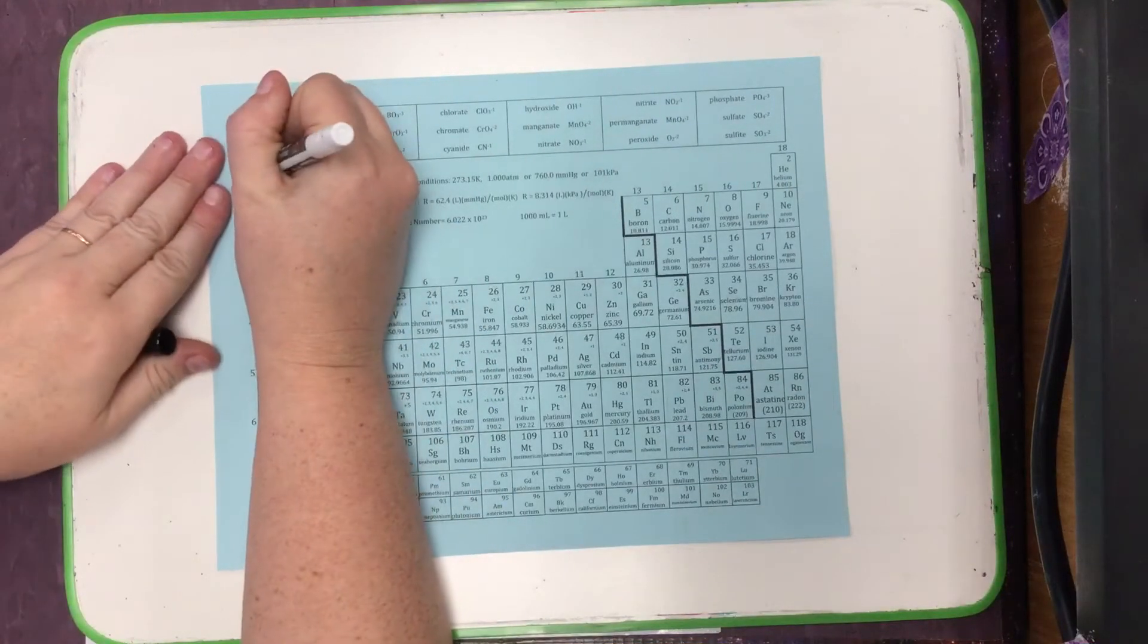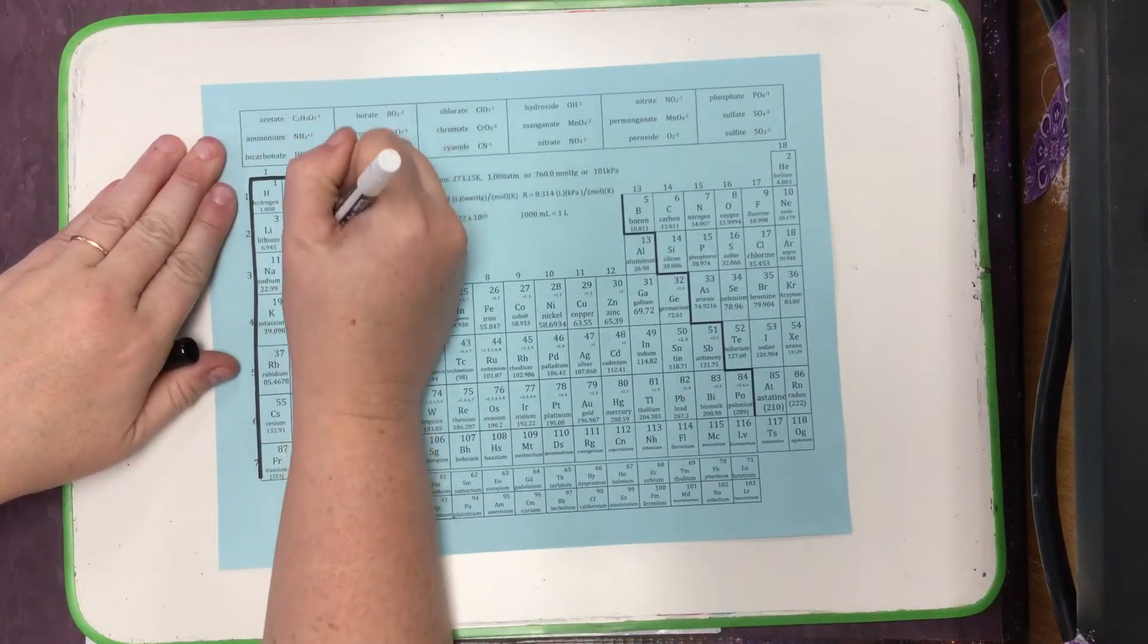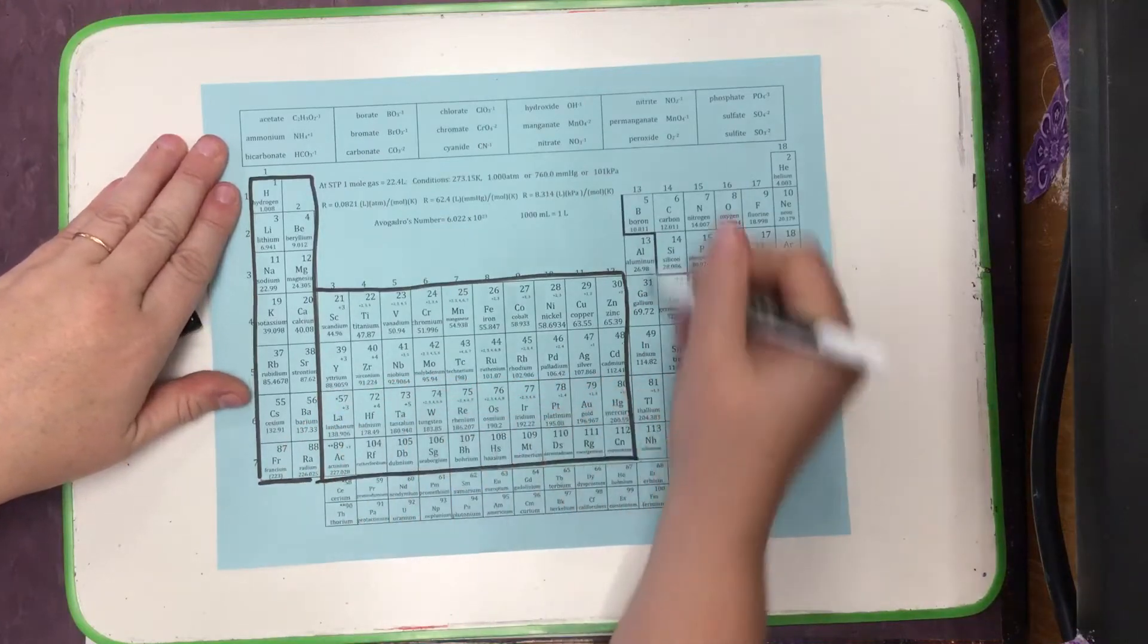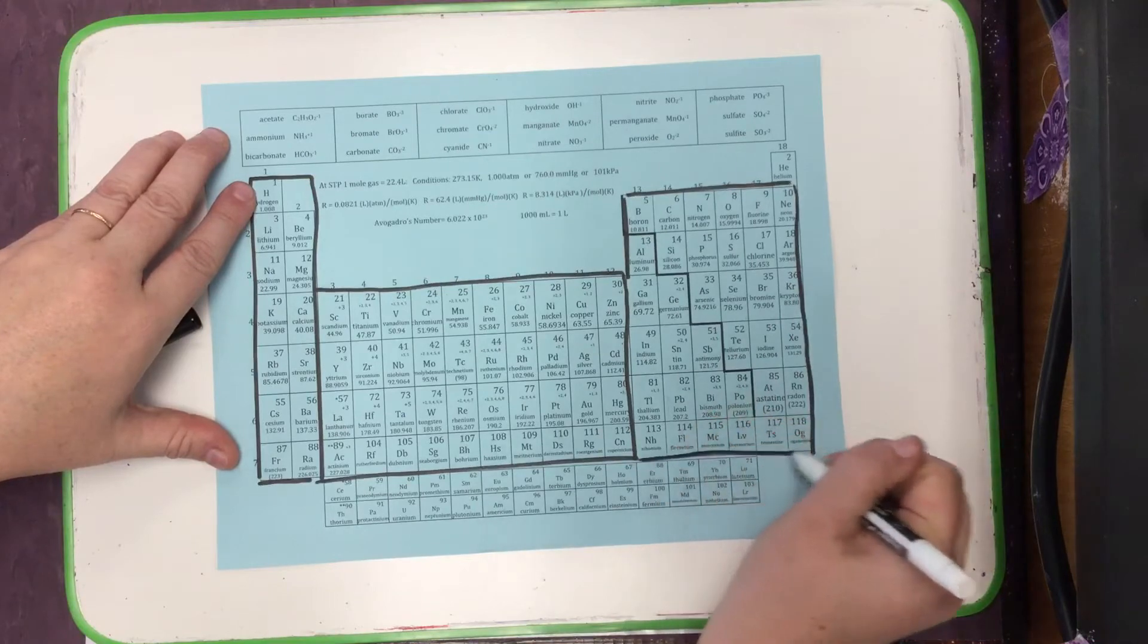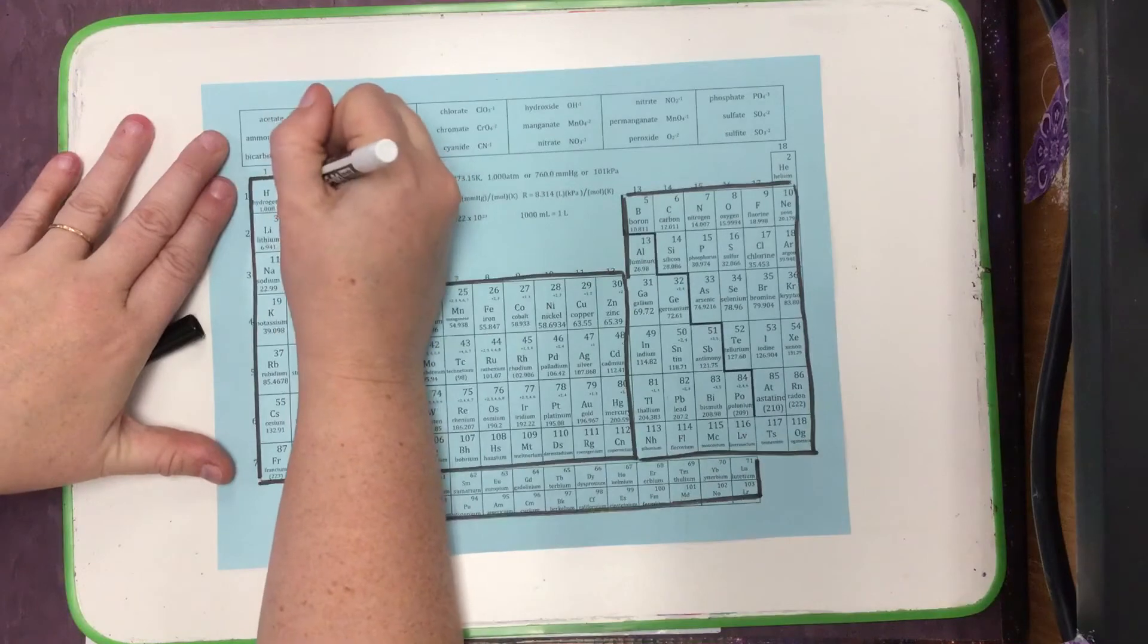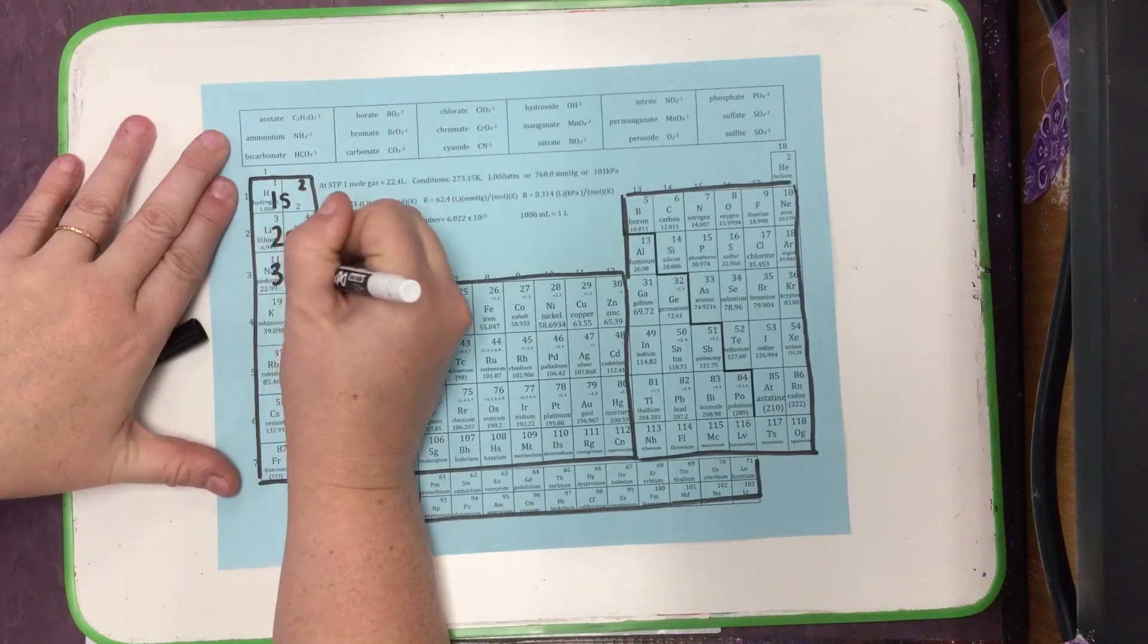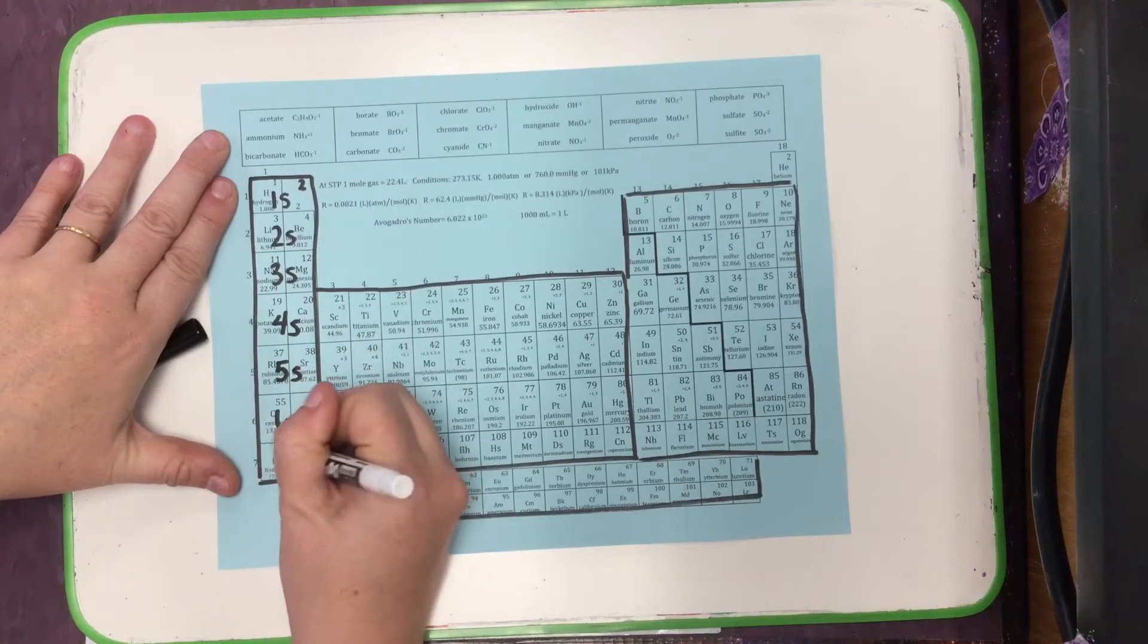Just like before, anytime we're looking at orbital notations, electron configurations, whether it's long or shorthand, we want to first label our table. We start over here, move helium over, and then start with our S rooms: 1S, 2S, 3S, 4S, 5S, 6S, and 7S.